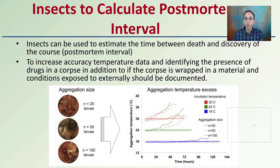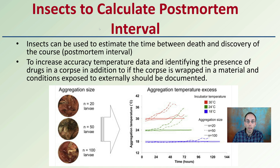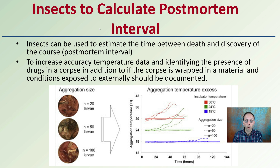Insects can be used to estimate the time between death and discovery of the corpse, which is called the postmortem interval. To increase accuracy, temperature data, the presence of drugs in a corpse, whether the corpse was wrapped in a material, and the external conditions it was exposed to should all be documented. All of these variables can be factored in to develop the closest possible estimation to the original time of death. We can see here how incubation temperature and time in hours can have an impact, and knowing whether the corpse was wrapped in some external material can also influence those intervals.